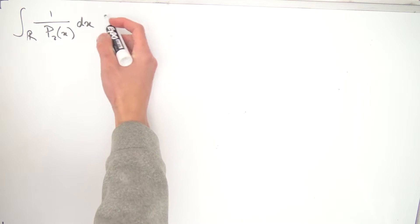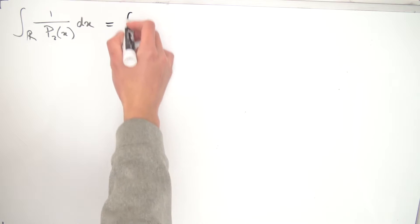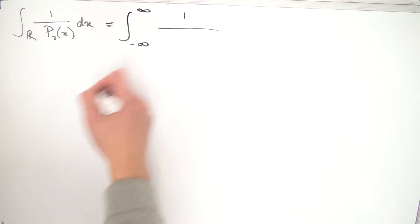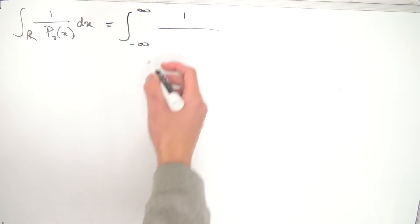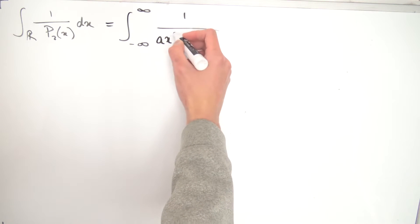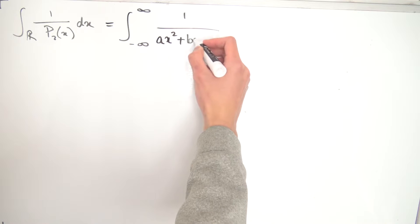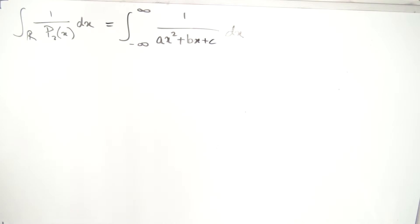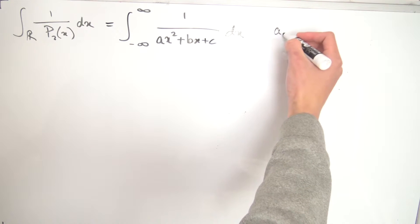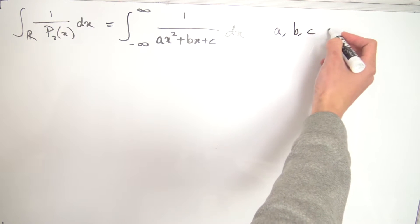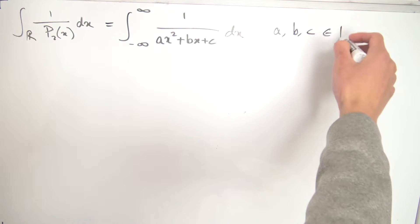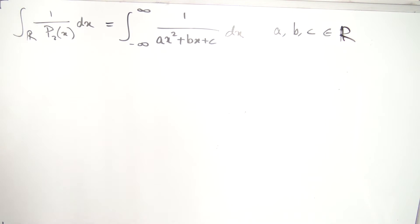Let's just get started. I want to rewrite this integral a little bit. This is going to be the integral from minus infinity to infinity of 1 over p2(x), which is just a quadratic in the form ax² + bx + c dx. We want a, b, and c to be real numbers. There are probably other methods you could use if you want these to be complex numbers, but we're just going to assume these are real numbers for now.